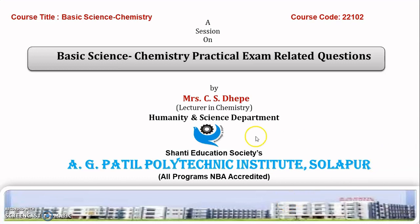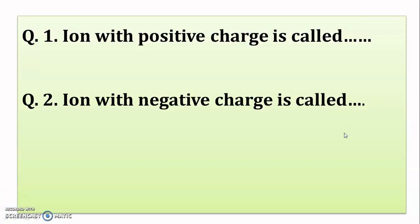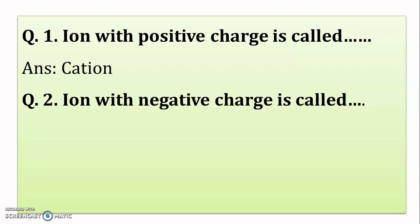Hello students. In this video we are going to see some basic science chemistry practical related questions. First question: an ion with positive charge is called a cation; an ion with negative charge is called an anion.